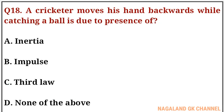Question number eighteen: a cricketer moves his hand backwards while catching a ball. This is due to the presence of what? The correct answer is option number B, that is impulse.